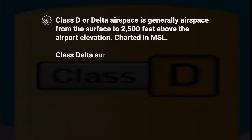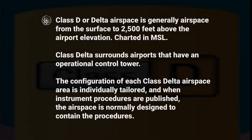Class D or Delta airspace is generally airspace from the surface to 2,500 feet above the airport elevation. This is charted in MSL. Class Delta surrounds airports that have an operational control tower. The configuration of each Class Delta airspace area is individually tailored, and when instrument procedures are published, the airspace is normally designed to contain the procedures.